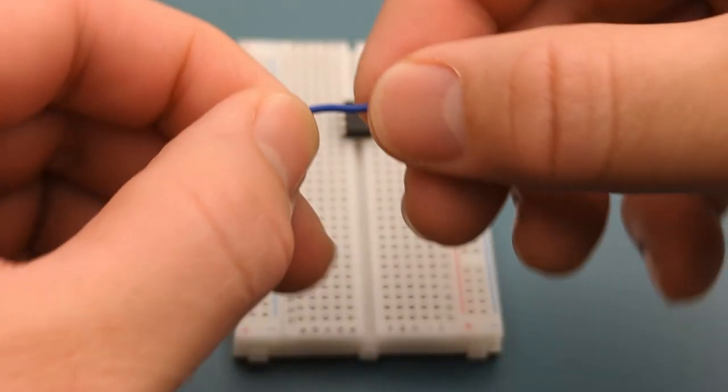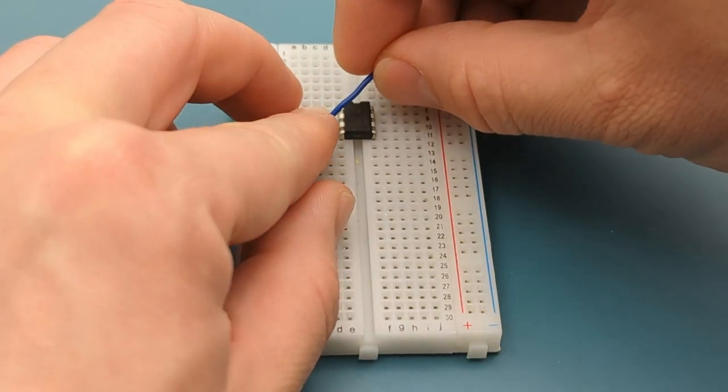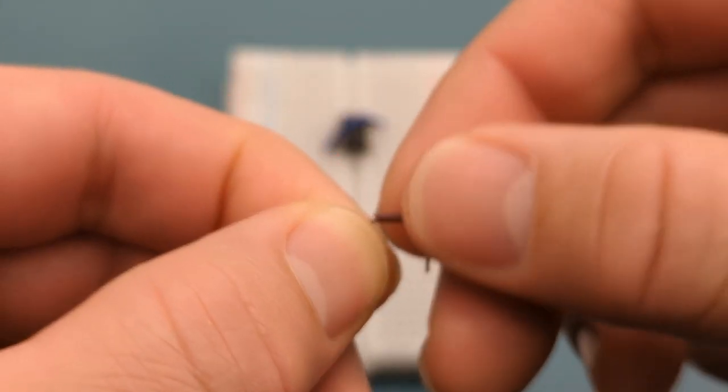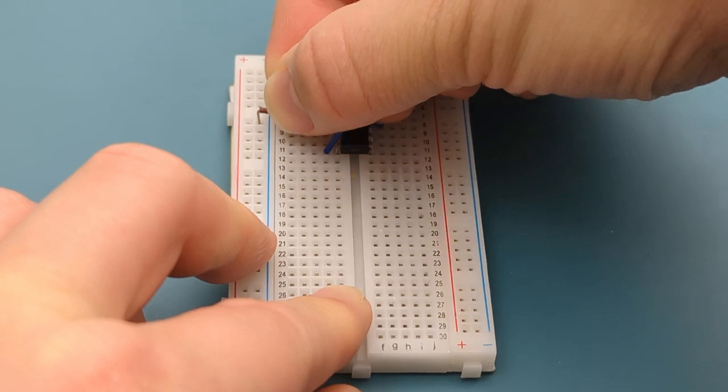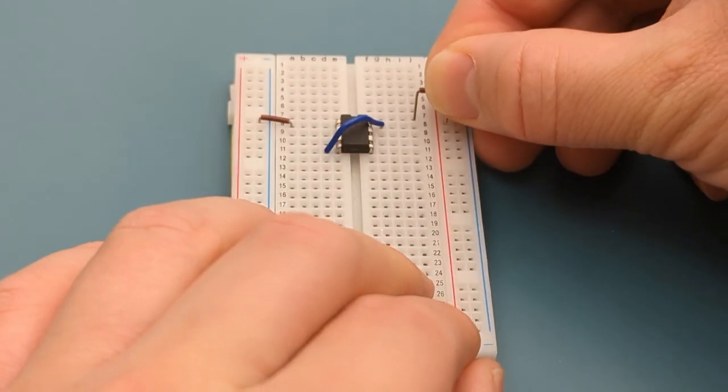Use a jumper wire to connect pin 4 or reset to pin 8 or VCC. A jumper wire connects pin 1 or ground to the negative rail. A jumper wire connects pin 8 or VCC to the positive rail.